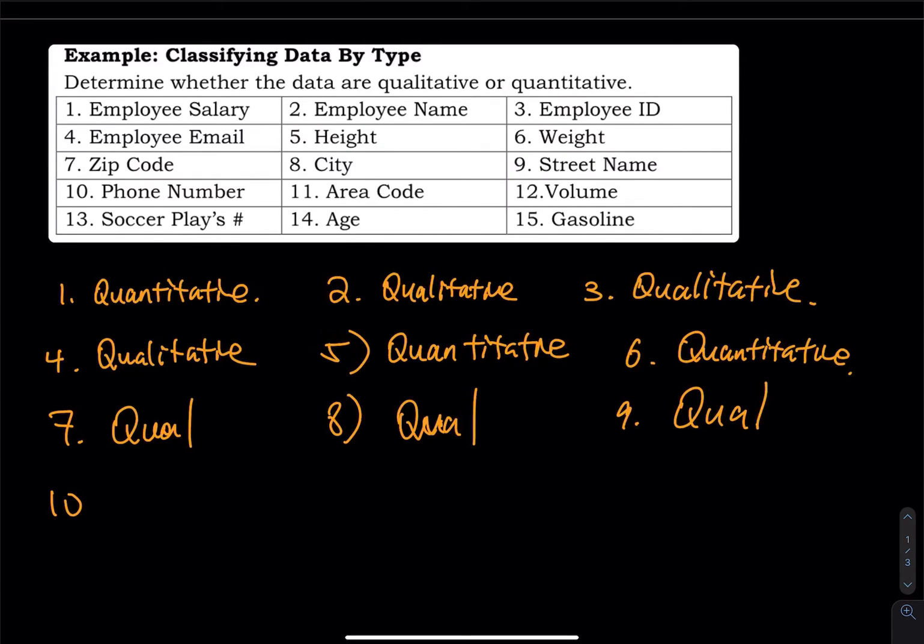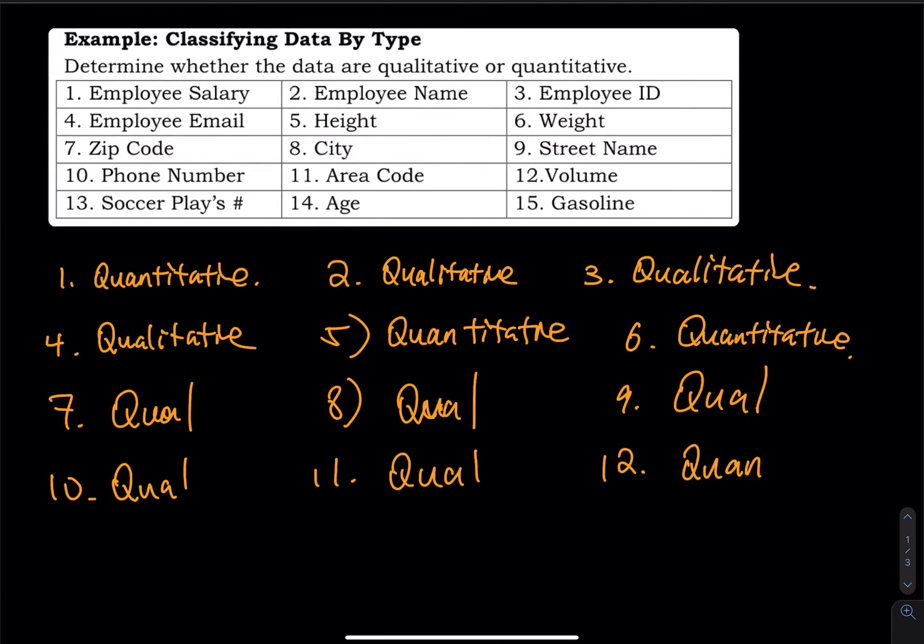Number 10, phone numbers. They are numbers, but they are qualitative data. 11, area code. Area code represents your county. So that is qualitative. Number 12, volume. Volume must be quantitative. One gallon of milk. You don't say one milk. One gallon of milk. The bottle can fit one gallon of milk. It's a quantity, so quantitative. And then number 13, soccer player's number. That represents the person's name or the person's last name. So that must be qualitative.